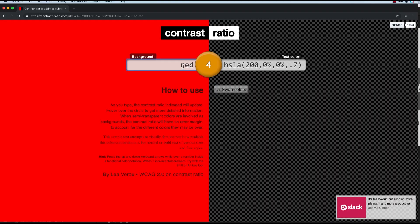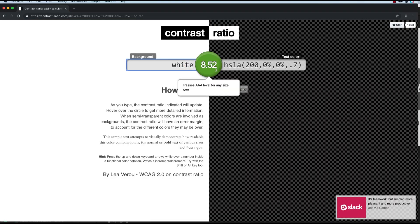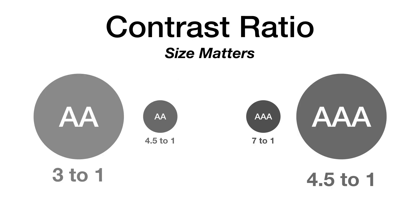There are plenty of free contrast checkers on the internet — I'm looking at one, contrasratio.com. Our goal should be a 7 to 1 contrast ratio for small text, and at least a 4.1 ratio for larger text, although we can still do better.